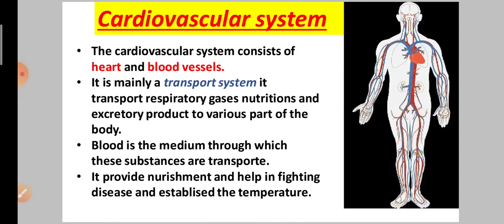First of all, the cardiovascular system consists of the heart and blood vessels. The cardiovascular system is the main transport system of the body — it transports respiratory gases, nutrients, and excretory products to various parts of our body.